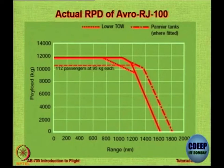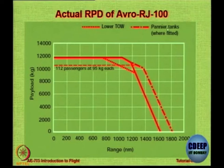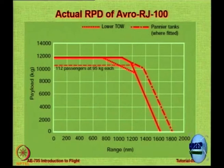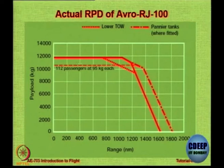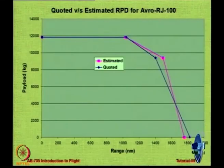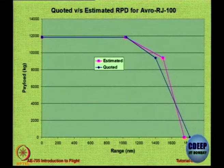Those pannier tanks are additional fuel tanks that can be fitted inside the aircraft for delivery purposes. With 112 passengers at 95 kg each, this is the range-payload diagram — it is just increasing with no kink line. You can see this is estimated versus quoted: whatever numbers we do in class are very similar to the actual numbers.